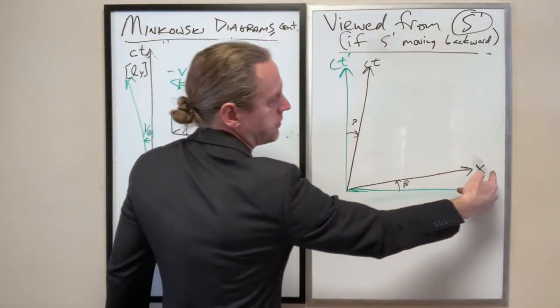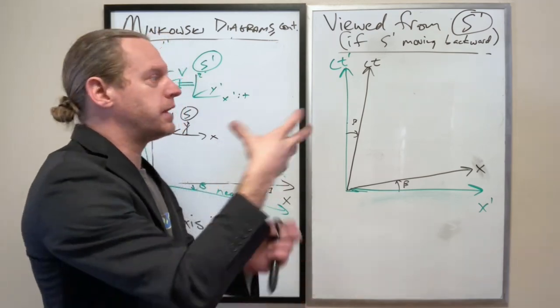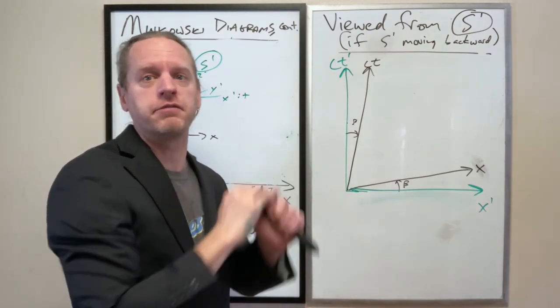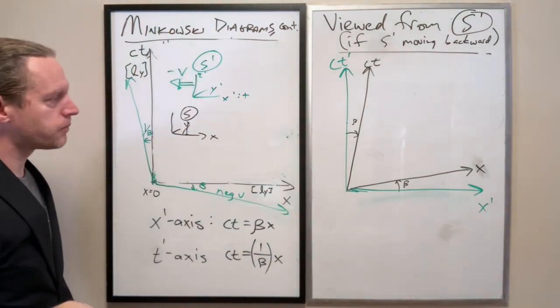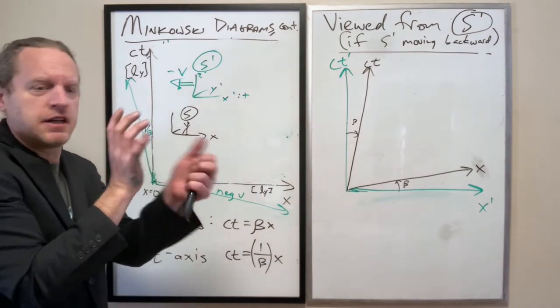The only difference is now we've exchanged the primes and the unprimes because that velocity forced us to flip the sign in the first place. So I think it's kind of a nifty symmetry here.